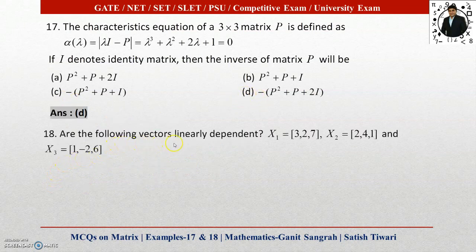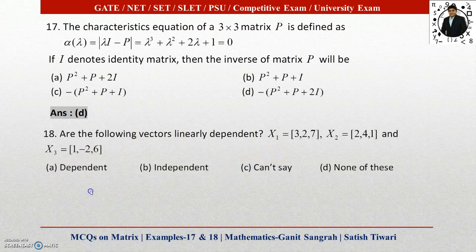Example number 18: Are the following vectors linearly dependent? X₁ = [3,2,7], X₂ = [2,4,1], and X₃ = [1,-2,6]. Four options are there: dependent, independent, can't say, and none of these. To check if these vectors are independent or dependent, we will use the concept of rank.